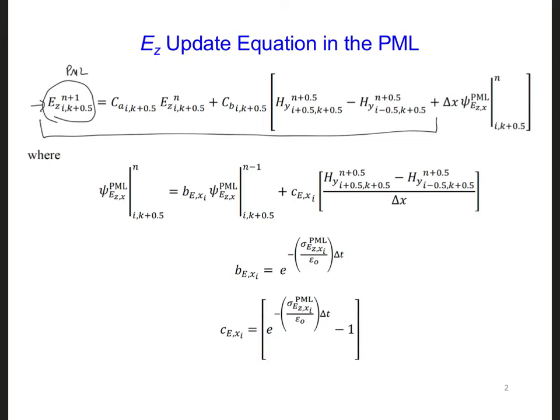But then in the PML region, at every i and k plus one half, which is the same location as all the EZ components in the PML region, there is an extra term that we need to add, this delta x times psi.